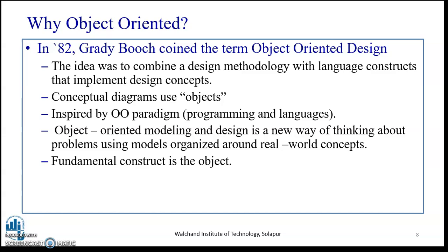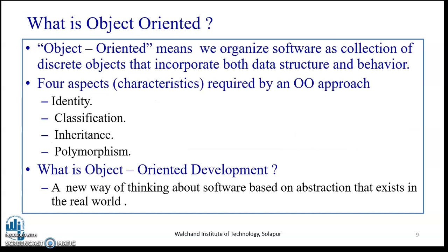In 1982, Grady Booch coined the term object oriented design. His idea was to combine a design methodology with language constructs that implement conceptual diagrams using objects. Inspired by object oriented programming paradigms, object oriented modeling and design is a new way of thinking about problems using models organized around real world concepts. Object oriented means we recognize and organize software as a collection of discrete objects that incorporate both data structure and behavior. The four aspects required are identity, classification, inheritance, and polymorphism.